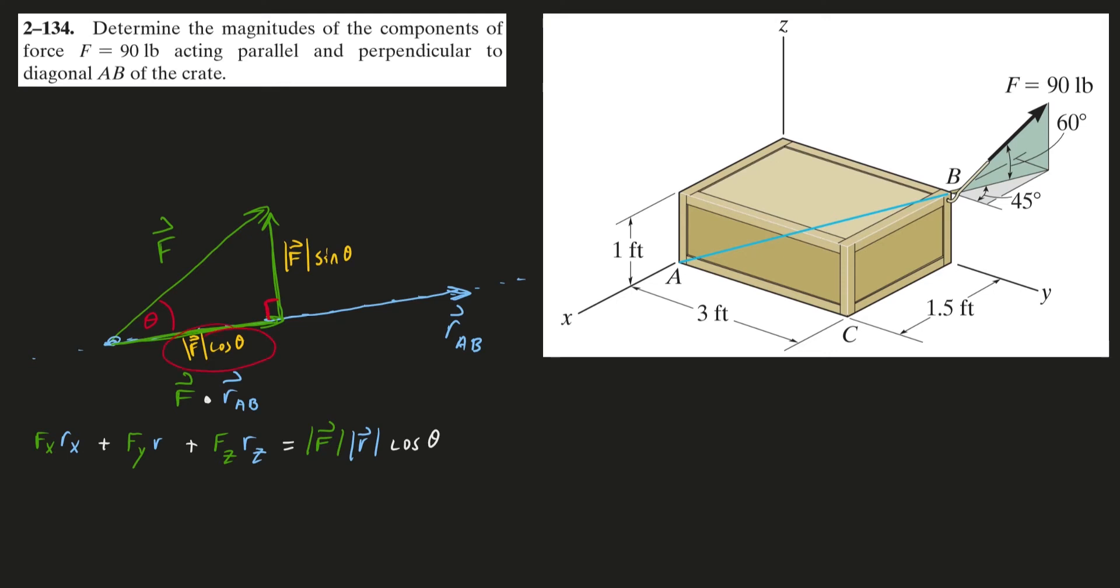So, I can find this parallel component super easy. I just need to find magnitude of F times cosine of theta. Well, there it is right there. All I got to do is get it by itself. And all I have to do to do that is divide both sides of the equation by the length of my blue vector, my position vector AB. It's as simple as that. It cancels here. And I'm left with magnitude of F times the cosine of theta.